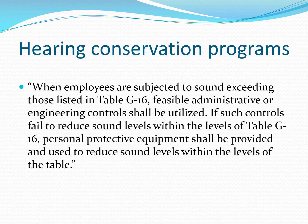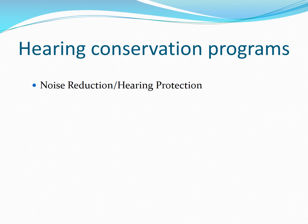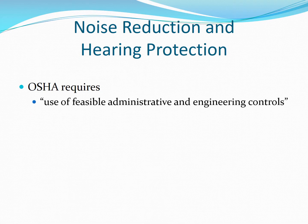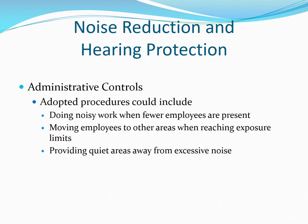When these levels are exceeded, employers are required to find a way to reduce the noise. OSHA requires employers to make feasible attempts at noise reduction through administrative or engineering controls. If these efforts fail, personal protective equipment must be provided. Administrative controls are procedures that employers can adopt to reduce employee exposure to loud noise, such as doing noisy work when fewer employees are present, assigning employees to work in other areas when they have reached their exposure limits, and by providing quiet areas away from excessive noise.